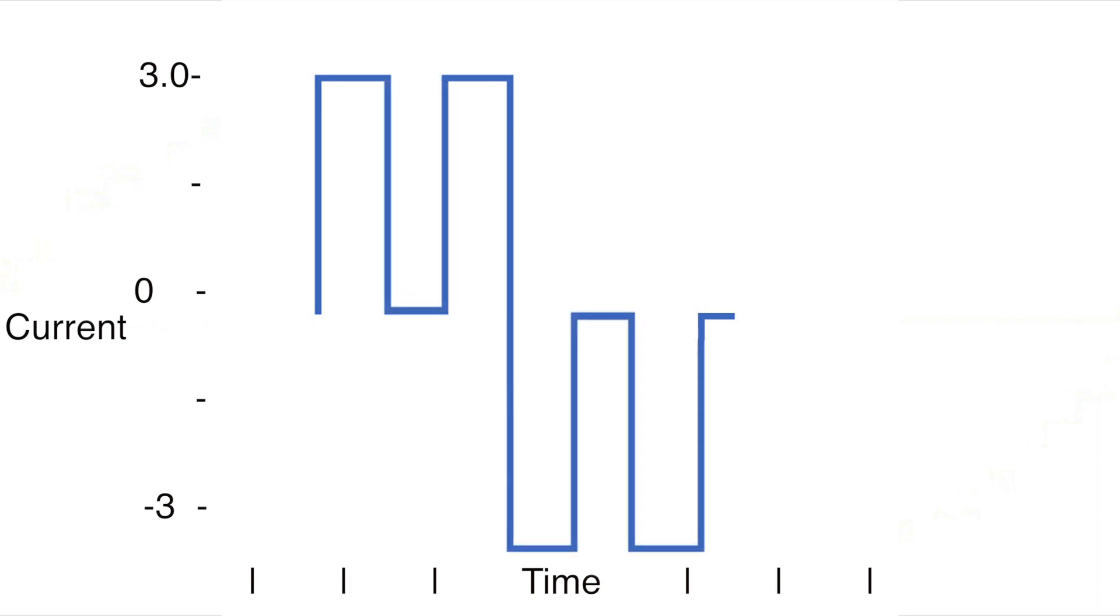For a pulse with a duration of 5 milliseconds, assuming a speed of 1 revolution per second and 200 steps per revolution, we can calculate the RMS current.